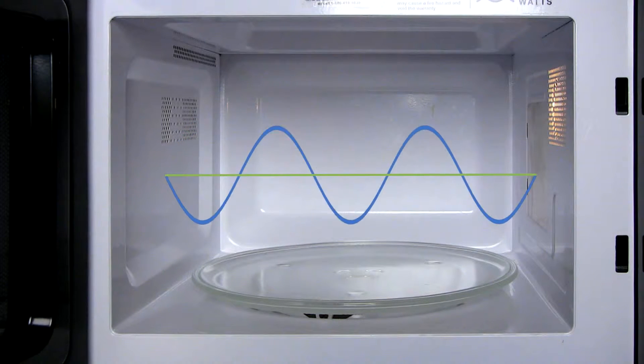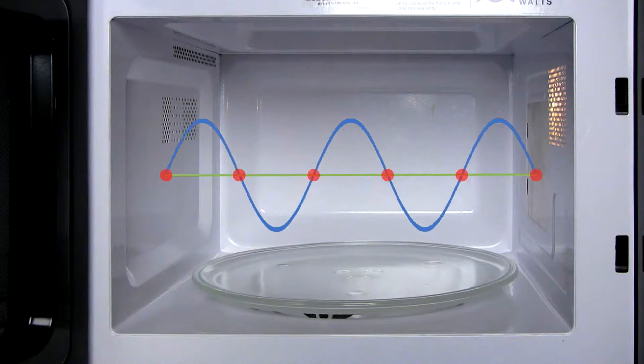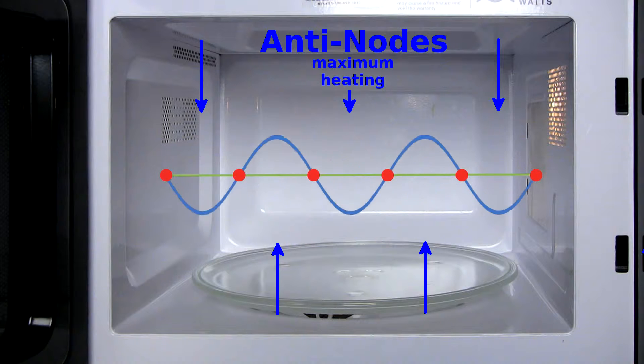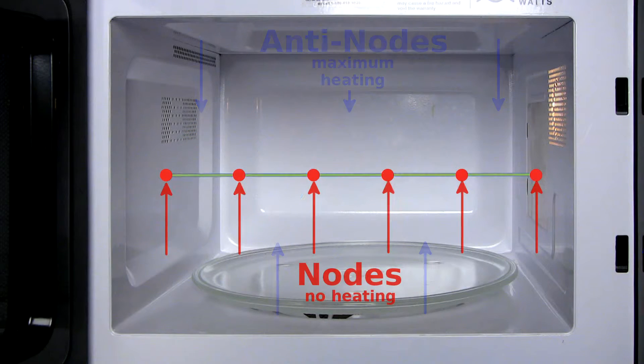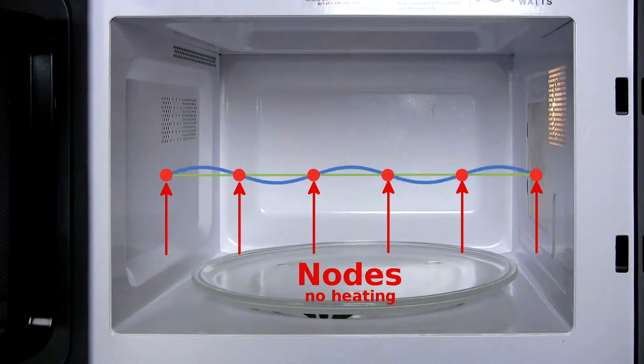The three-dimensional pattern of waves is difficult to predict, but the principle can be seen by looking at the waves in a single dimension. The peaks and valleys in the wave represent the greatest energy of the wave, while the nodes here correspond to the cold spots inside the chamber.